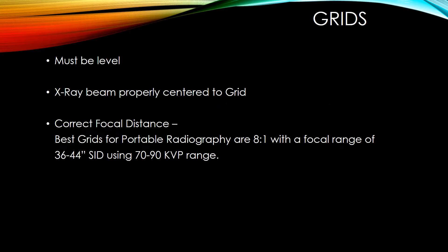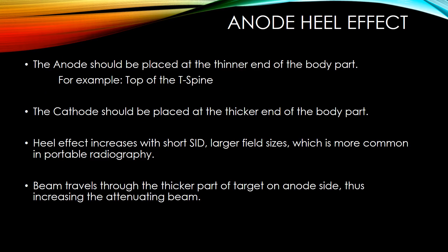Grids must be level, with the x-ray beam properly centered to the grid at the correct focal distance. The best grids for portable radiography are 8:1 with a focal range of 36 to 44 inch SID, using a 70 to 90 kVp range. Anode heel effect: the anode should be placed at the thinner end of the body part — for example, the top of the spine. The cathode should be placed at the thicker end. The heel effect increases with short SID and larger field sizes, which is more common in portable radiography.